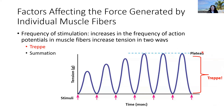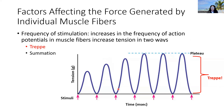Treppe is not fully understood because we don't quite know why it occurs, especially because in between each of these action potentials, the muscle is able to fully relax — all the calcium leaves the cytoplasm and the muscle fully relaxes. But for some reason, the subsequent contraction generates more force, even though the action potential is exactly the same.